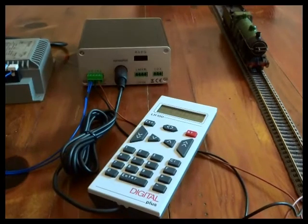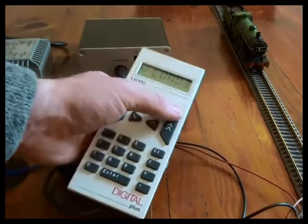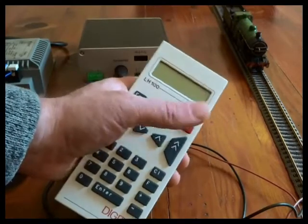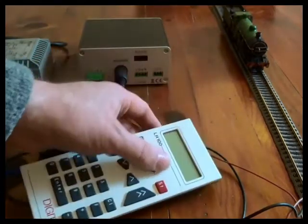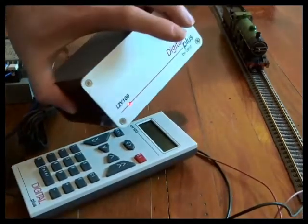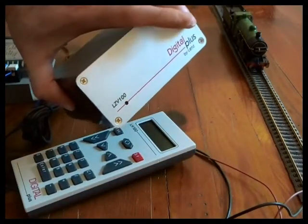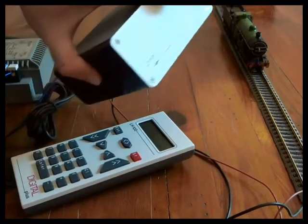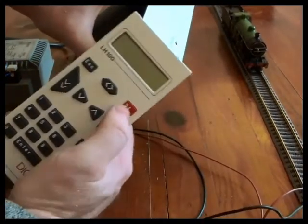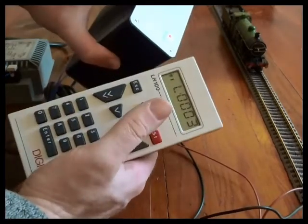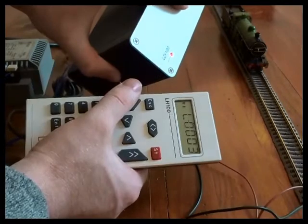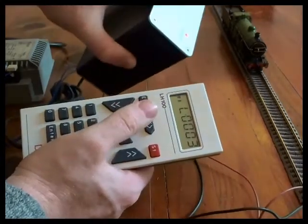Sometimes when you first connect the system it might start up in the emergency stop situation. You'll have flashing ELS or OFF on the screen and the LED on the LZV100 will be flashing. To clear that, press the ST button, the stop button. The screen comes back and the light goes from flashing to steady.